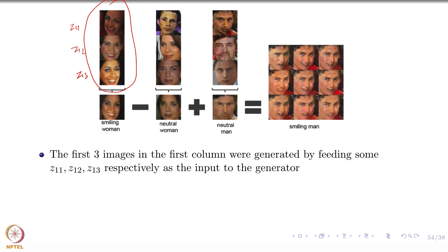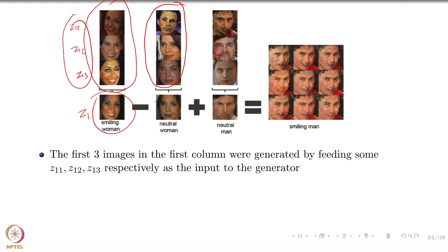They observed that all of these are smiling women faces. What they did is they took the average of these vectors, came up with an average Z1, fed it to the generator, and it gave some average smiling woman. The same thing for the second row: you have Z21, Z22, Z23 and you get an average neutral woman. And the same for the third row. So now you have Z1, Z2, and Z3, which represent the averages of smiling woman, neutral woman, and neutral man.